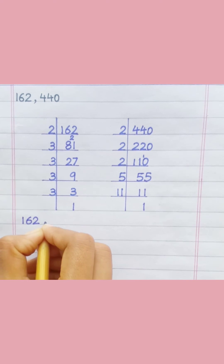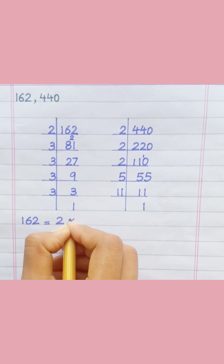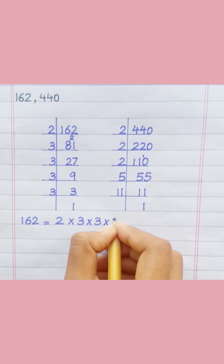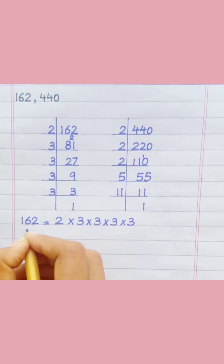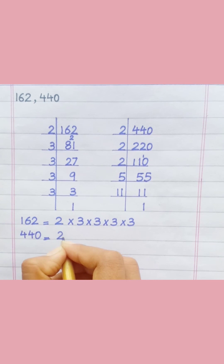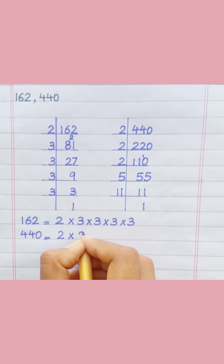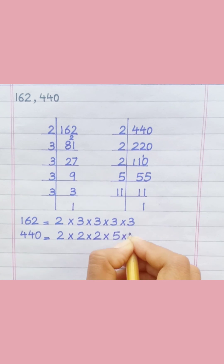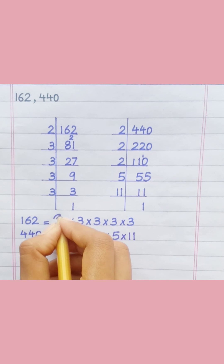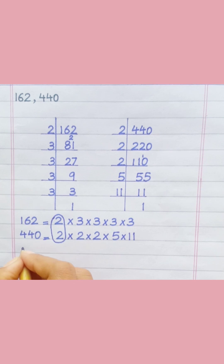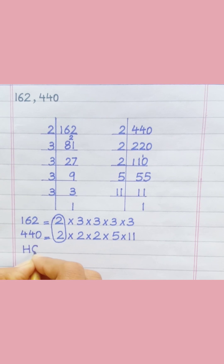162 equals 2 × 3 × 3 × 3 × 3. 440 equals 2 × 2 × 2 × 2 × 5 × 11. 2 is the only common prime factor among both numbers, so HCF is equal to 2.